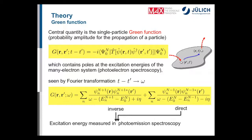If we do a Fourier transformation from the time domain to the frequency domain, the Green function has poles right where the many-body system has excitation energies — the energy eigenvalues from the many-body Schrödinger equation. This is why we are interested in the Green function. Furthermore, taking the time argument to zero (minus infinitesimal) yields the static density matrix, which also becomes important later.